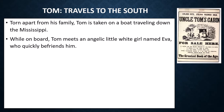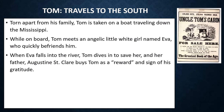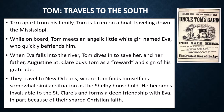While on board, Tom meets an angelic little white girl named Eva — the blonde girl we saw in the first picture — and they quickly become friends. She falls into the river and Tom dives in to save her. Her father is so grateful that he buys Tom as a reward — though he could have simply set Tom free. They travel to New Orleans, where Tom finds himself in a situation somewhat similar to the Shelby household. He becomes invaluable to St. Clare and forms a very deep friendship with Eva, in part because of their shared Christian faith.